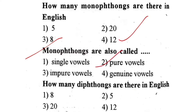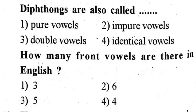Next question: How many diphthongs are there in English? First one, eight. Second one, five. Third one, twenty. Fourth one, twelve. The correct answer is first one — eight diphthongs.